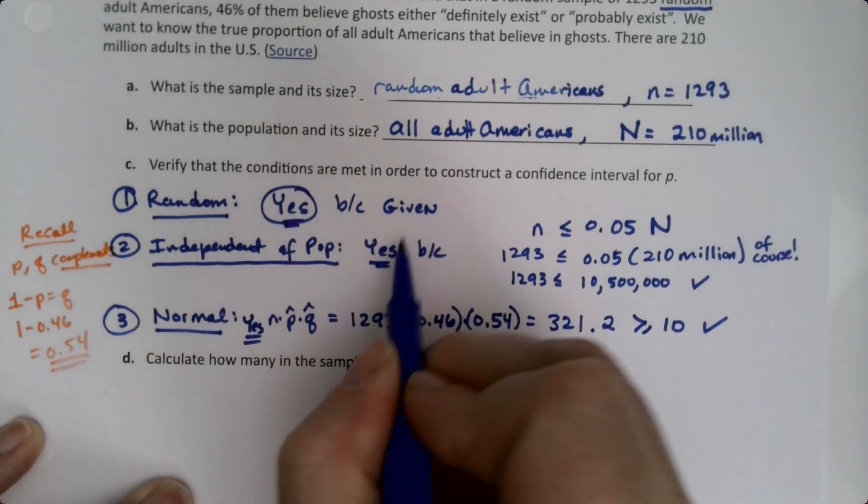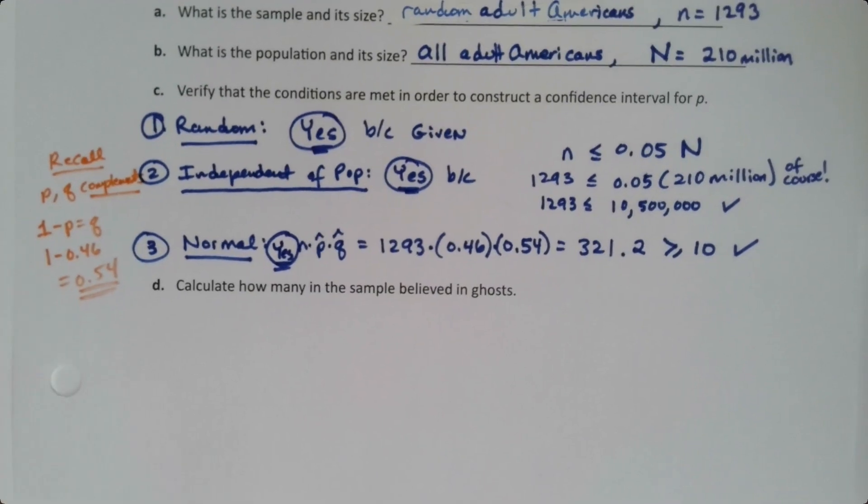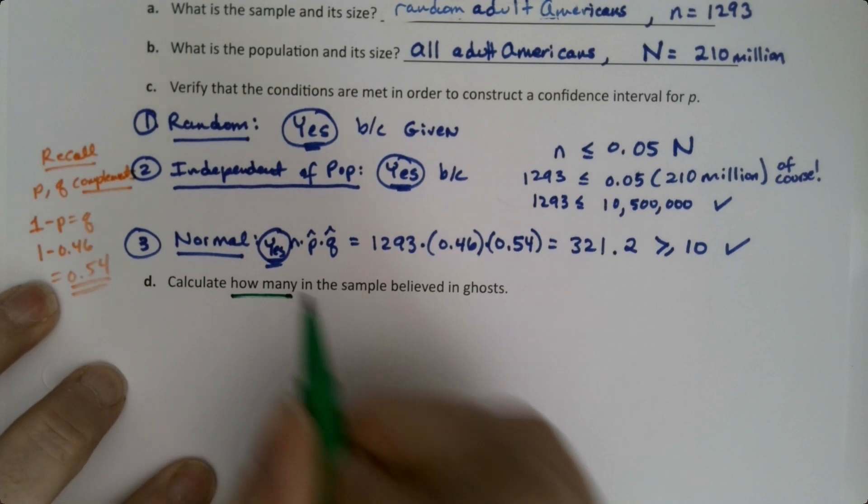That is indeed bigger than 10, so yes. This is yes, this is yes, and this is yes. We have three yeses—yes, yes, yes—we've met all the conditions to construct a confidence interval. Isn't that nice? Now, I'm not actually going to make the confidence interval yet. I'm going to take an aside and find out how many people believed in ghosts.